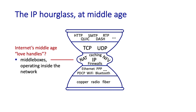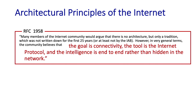How does the proliferation of middlebox functions fit into the overall vision of internet architecture? RFC 1958 addresses exactly this question. It states that many members of the internet community would argue there is no architecture, but only a tradition not written down for the first 25 years. However, in very general terms, the community believes that the goal is connectivity, the tool is the internet protocol, and the intelligence is end-to-end rather than hidden in the network — three cornerstone beliefs.